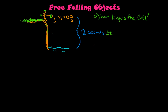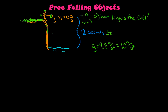We know that gravity is 9.8 meters per second squared, which for this problem we'll just say is 10 meters per second squared to make the math a little easier. We're just interested in the general height, so we'll call the bottom zero and call downward the positive direction. That way I can use a positive value for g.